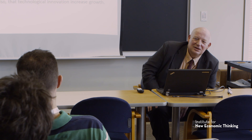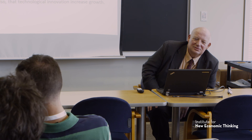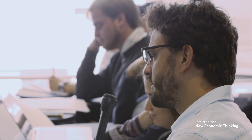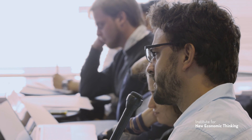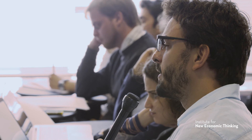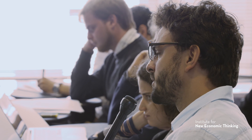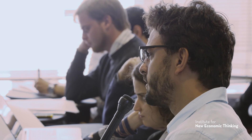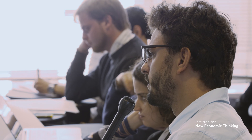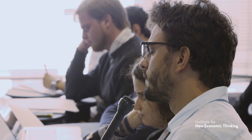Student question: In the Keynesian model, investment was all autonomous, as were exports. So what happened to the rate of capacity utilization in the model if investment and exports grow at different ratios — how can you correct it? Response: That issue comes in with this Harrod-Domar model. On the website of the Fields Institute there's an exchange between Marc Lavoie and Peter Scott that deals exactly with these issues.